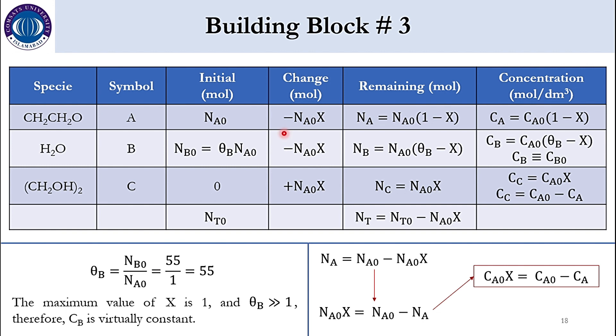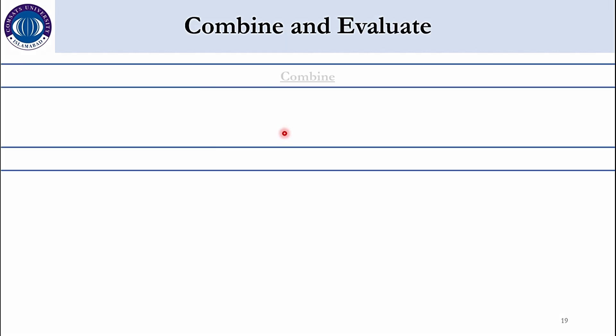Now moving on to our next step. Which is combine and evaluate. So combine all these. Minus dCA over dt is equal to kCA. Because here it was minus RA. So it is kCA. And minus dCA over CA is equal to kdt. CA goes here. dt goes here. Then we go to the evaluate part.